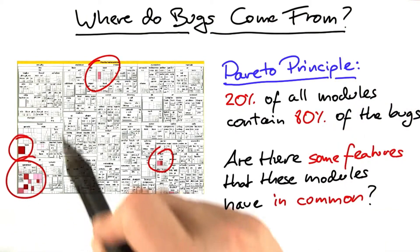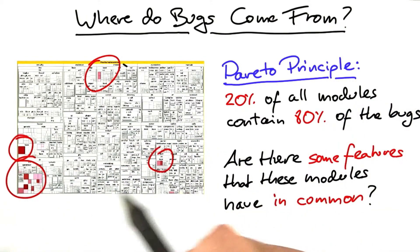Do these modules that actually are specifically bug-prone have something in common? And if they do have something in common, could we use this very feature to make predictions?